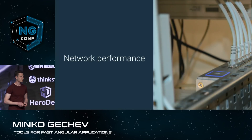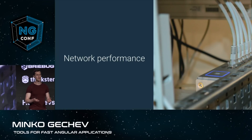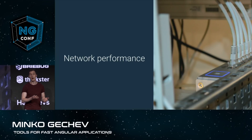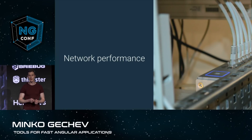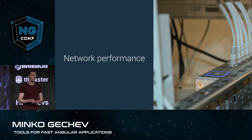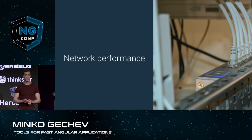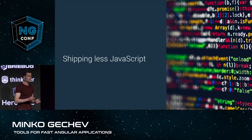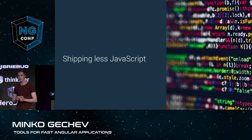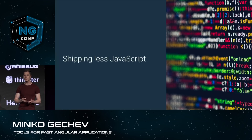Network performance is the time required for your application to get downloaded in the browser. We can optimize the network performance of our app just by reducing the number of bytes that we're transferring over the wire and reducing the number of network requests. A couple of tools that we have been working on aim to help you ship fewer bytes of JavaScript, because it turns out that JavaScript is more expensive than some other assets.